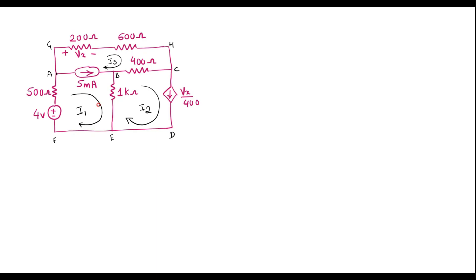In this circuit we can observe that there is a current source between loops I1 and I3. If there is a current source between two loops, we need to analyze the current source first. So the 5 milliamp source gives us: 5 × 10⁻³ = I1 − I3. Let me call this equation 1.